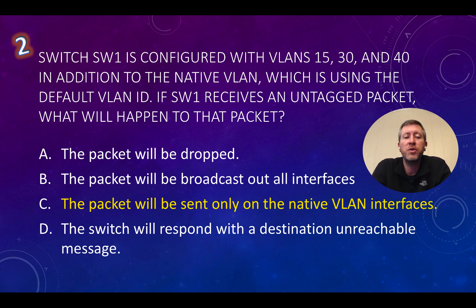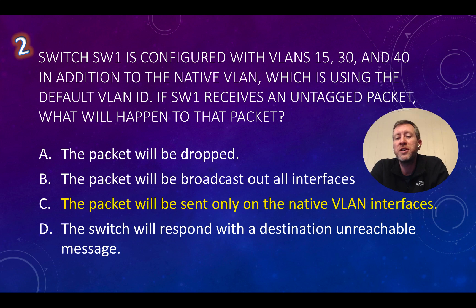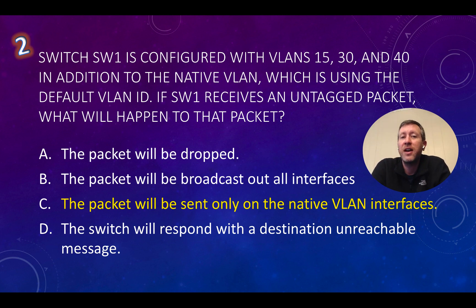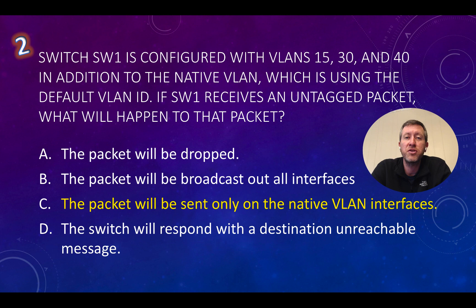So it will forward the packet out any interfaces associated with VLAN 1, or that native VLAN. The option that matches is C: the packet will be sent only on the native VLAN interfaces. The packet will not be dropped, it's not going to be broadcast out all interfaces, and the switch isn't going to respond with a destination unreachable message either.